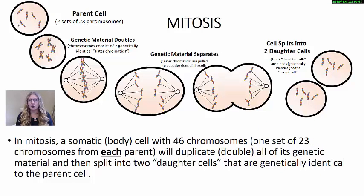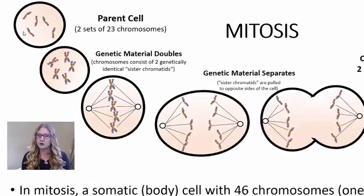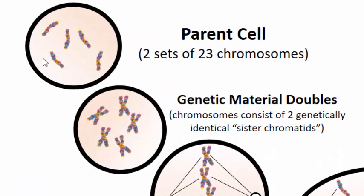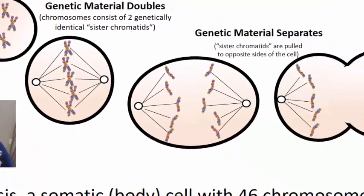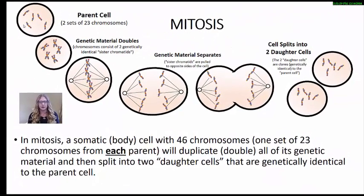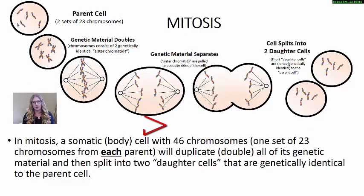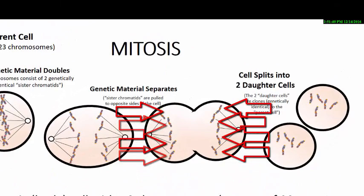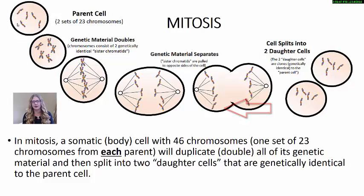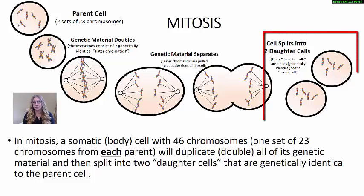When we talk about mitosis, we start off with a parent cell that has two sets of 23 chromosomes — 46 total. The genetic material is going to double, then line up at the center of the cell, and spindles are going to pull the genetic information apart. When they are pulled apart like that, they are called sister chromatids — one sister chromatid going to one side and one to the other. Eventually that cell undergoes cytokinesis, where it completely separates into two individual daughter cells that are genetically identical to the parent and to each other.